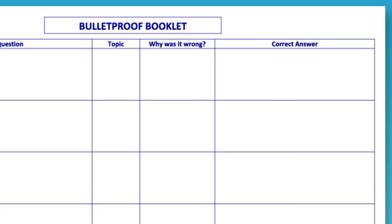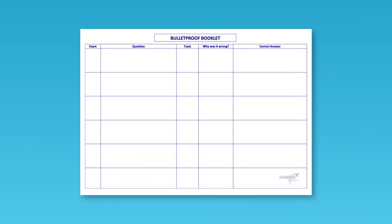Really look for the reason that you lost marks in that question — this is where you want to be. And finally, you'll want to write in the correct answer in the final column. So in this way, you have a booklet or table dedicated to identifying your weaknesses, showing you why you got something wrong and exactly how to fix it.